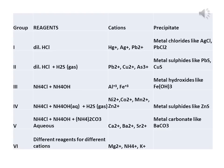For Group 3, the reagent is a mixture of ammonium chloride (NH4Cl) and ammonium hydroxide (NH4OH) aqueous solution added to the salt solution. The metals are precipitated as metal hydroxides. For example, if Fe³⁺ ions are present, you will get a reddish-brown precipitate of Fe(OH)₃. If no precipitate forms for Group 3, proceed to Group 4.